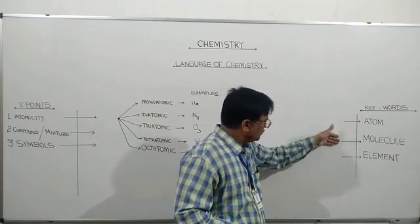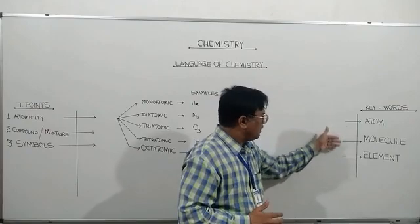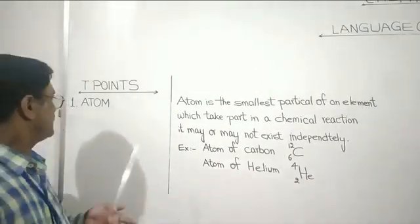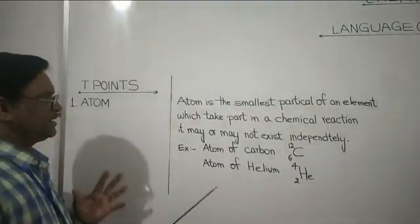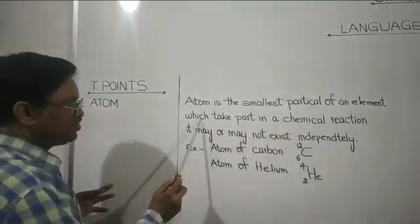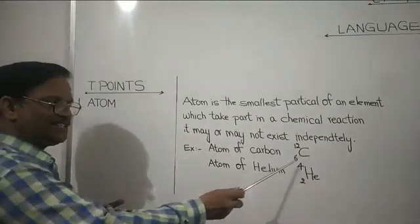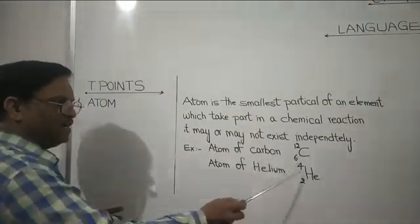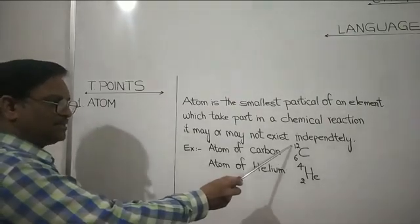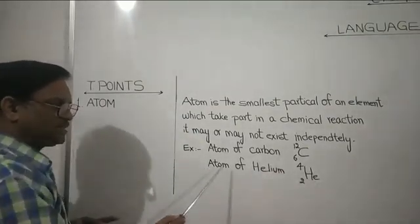To know the language of chemistry, let us understand deeply what atom, molecule, and element mean. The basic topic is atom. Atom is the smallest particle of an element which takes part in a chemical reaction. It may or may not exist independently. For example, the atom of carbon is C with atomic number 6 and mass number 12. The atom of helium has atomic number 2 and mass number 4. The symbol C indicates the symbol of a carbon atom, and He indicates the symbol of a helium atom.